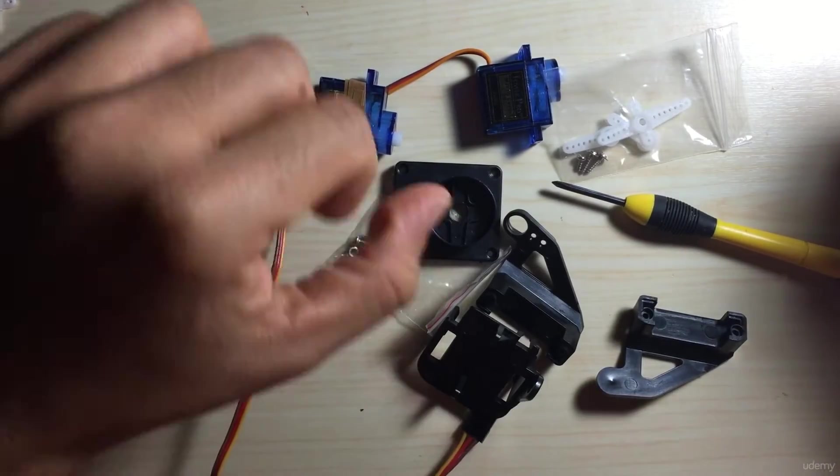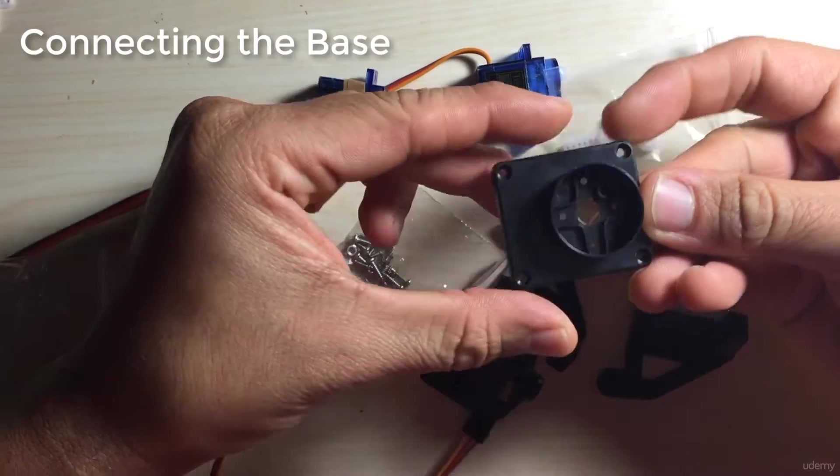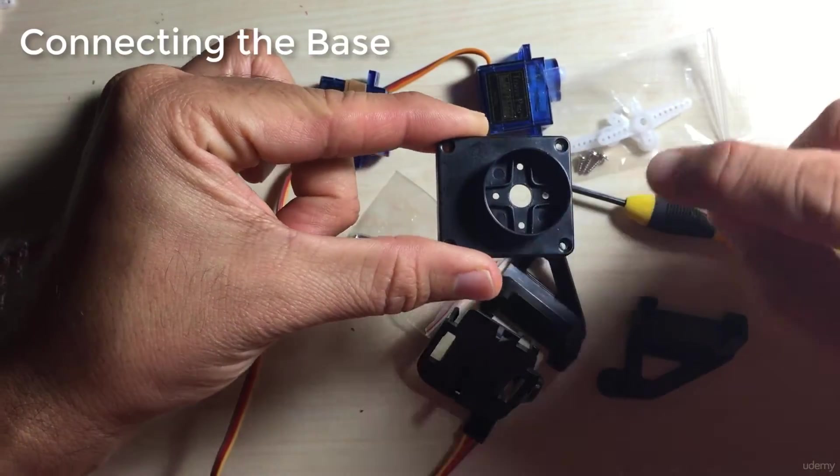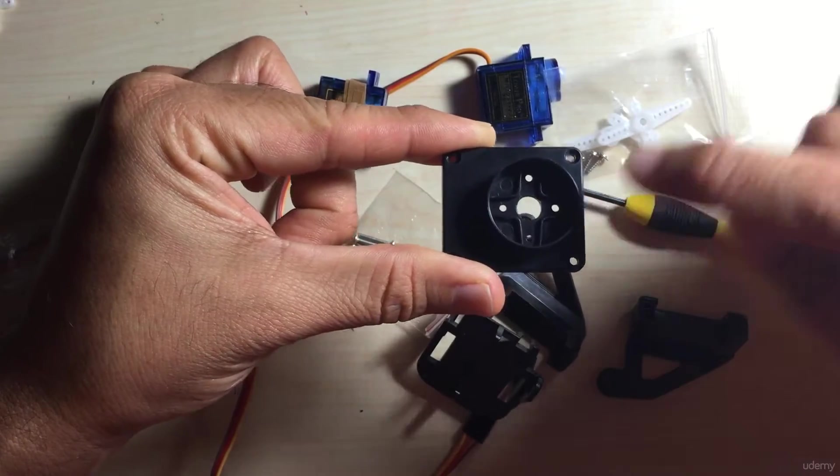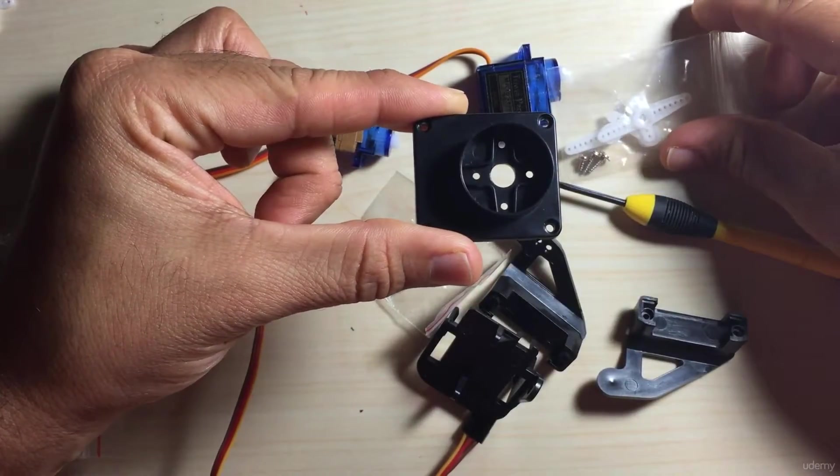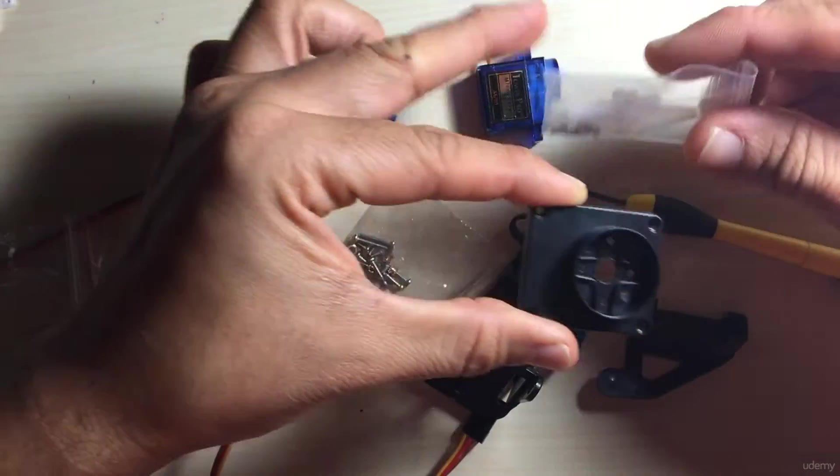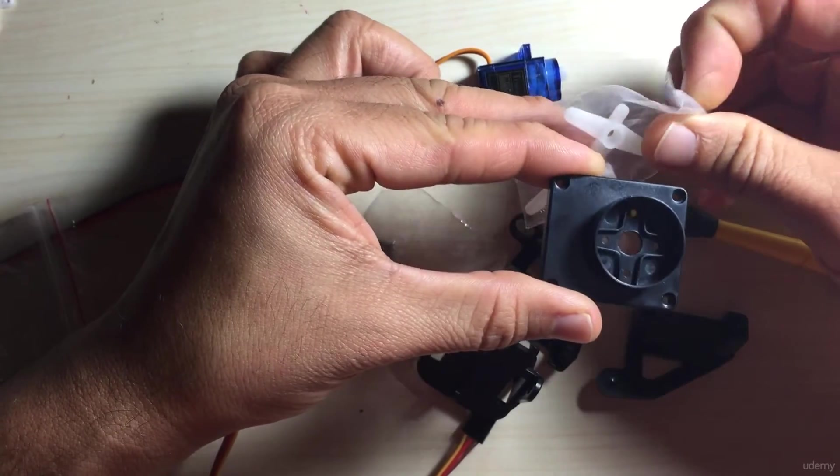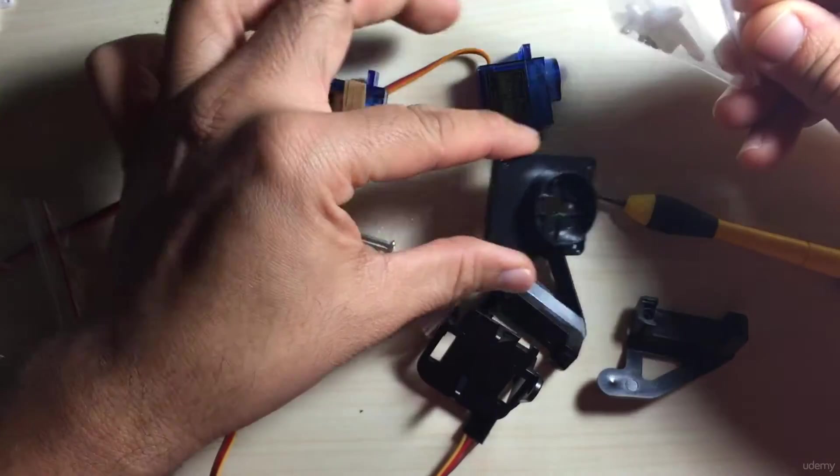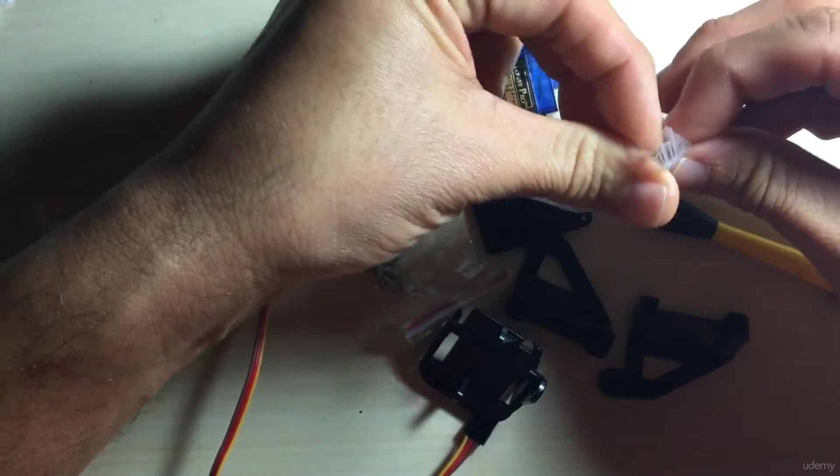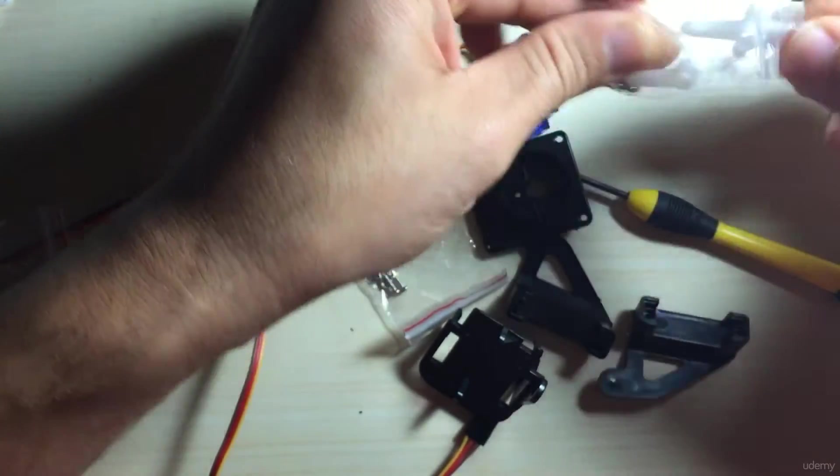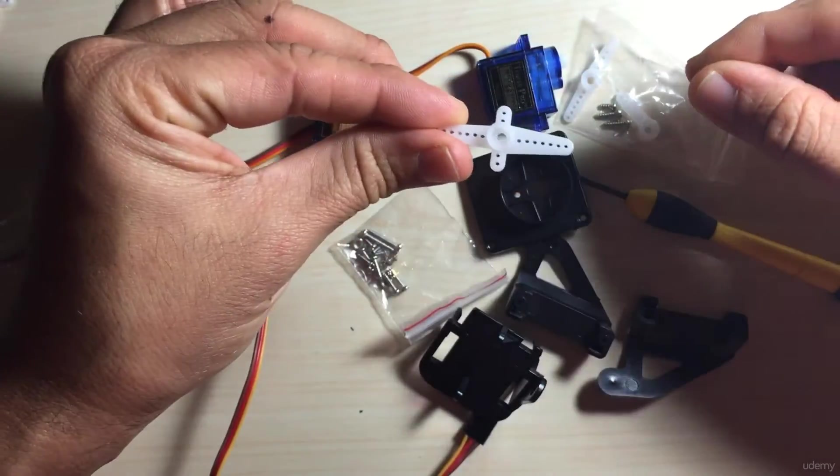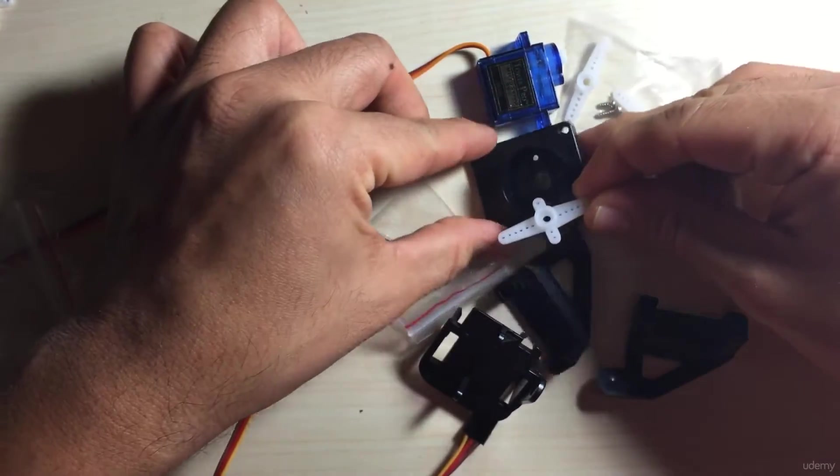Okay so first we're going to start with the actual base of the assembly and what you'll need here is a servo horn in a cross shape. Some of the servo kits do not come with a horn that fits exactly in here so the closest that I have in the collection of servo horns that I got was this particular one.